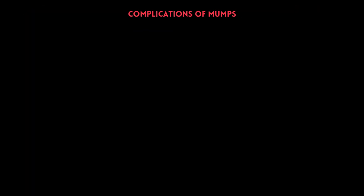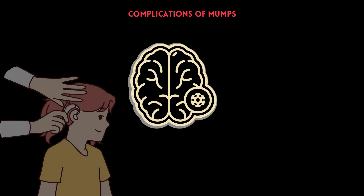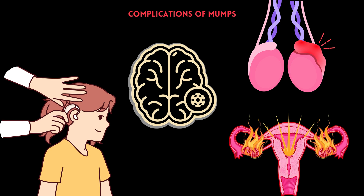Untreated mumps infection can lead to various complications. Some of them include meningitis and encephalitis, deafness, inflammation of the testis in males, and inflammation of the ovaries in females.